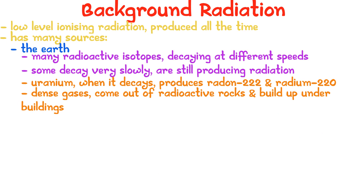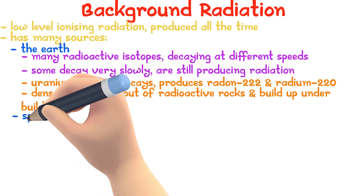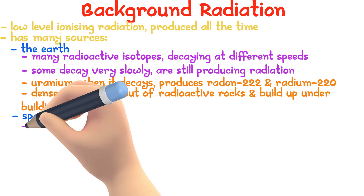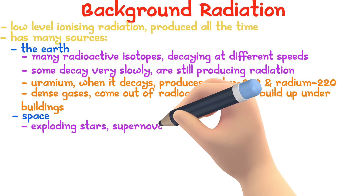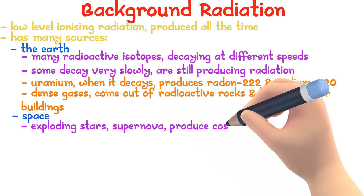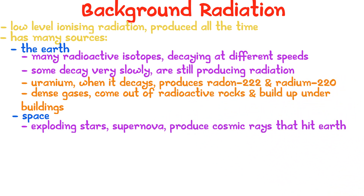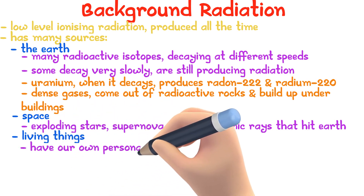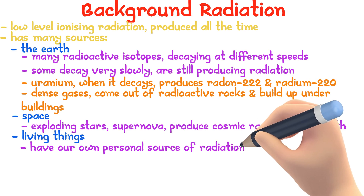Another source of background radiation is space, where exploding stars called supernovae produce cosmic rays that hit the earth. Another source of background radiation is from living things. Since the atoms that we are made of were originally made by violent reactions, we have our own source of radiation around us.